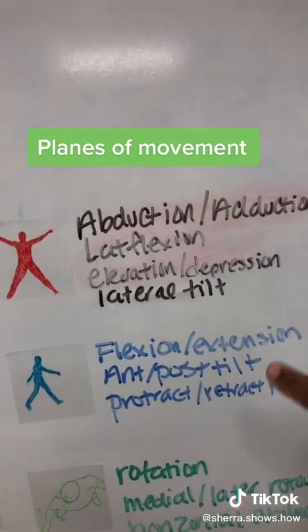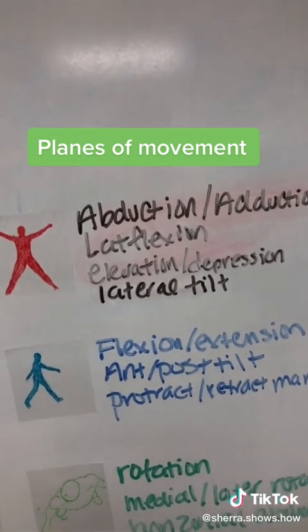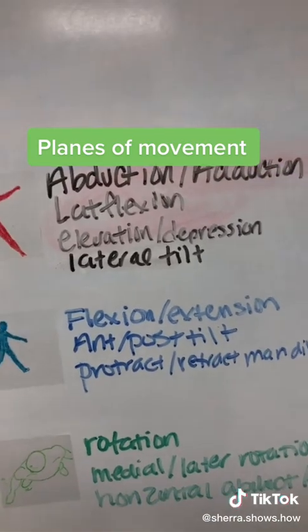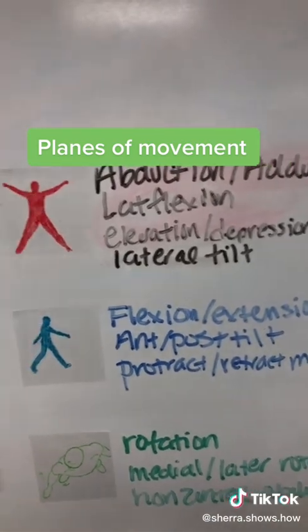Anterior and posterior tilt is something you can see in the sagittal plane, as well as protraction and retraction of the mandible.